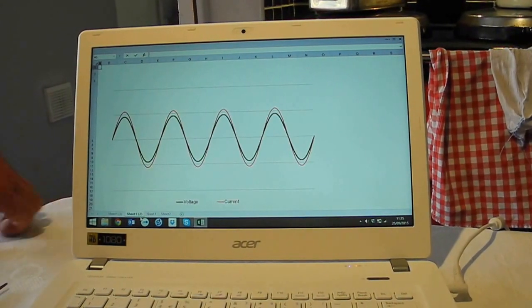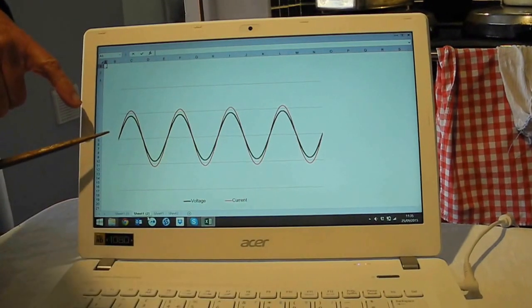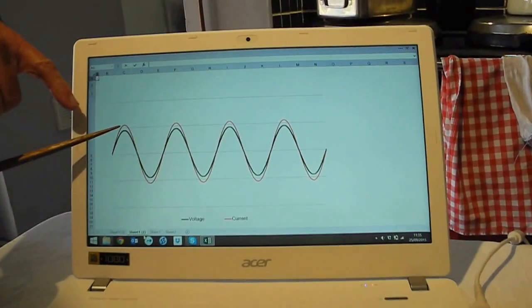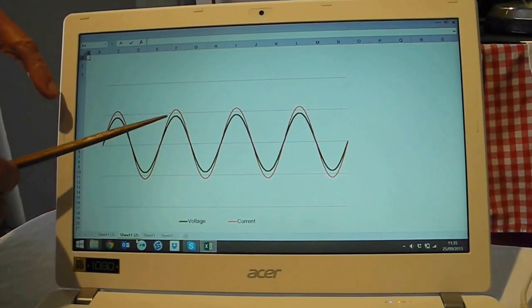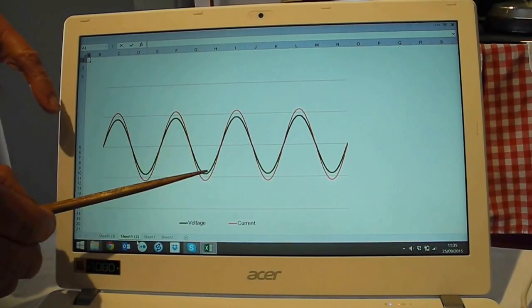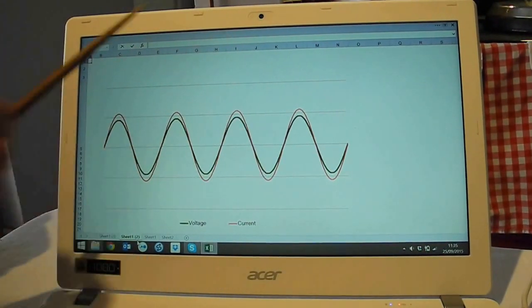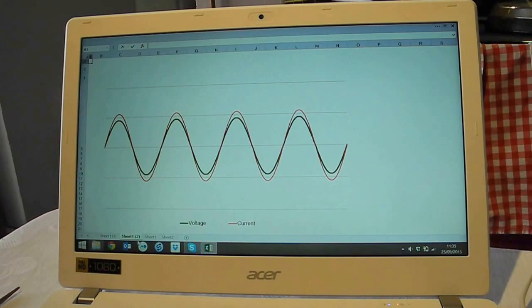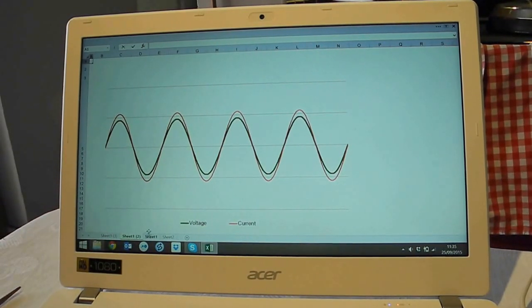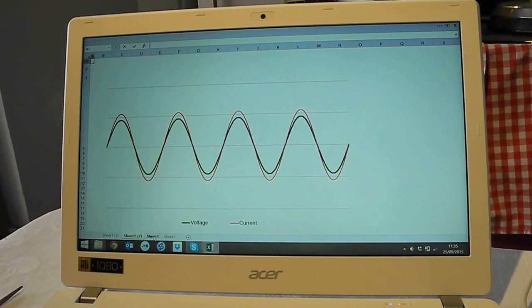If I do this we can now see that the current that will flow, represented by the red line, goes up and down in phase with the voltage represented by the green line.